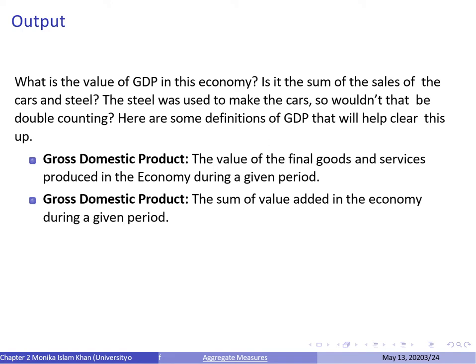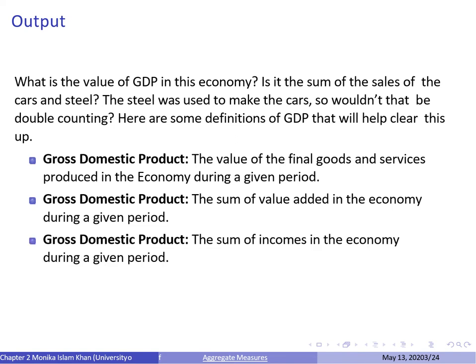The second way to measure GDP is the sum of value added in the economy during a given period of time. The third way is to sum all the incomes in the economy during a given period of time. All three definitions of GDP will essentially give you the same answer.